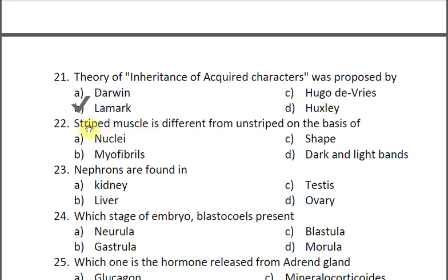Question twenty-two: Striped muscle is different from unstriped on the basis of — A nuclei, B myofibrils, C shape, D dark and light bands. The correct answer is D dark and light bands.